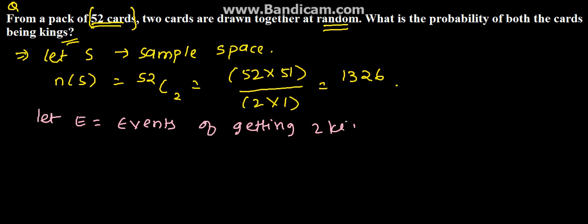We all know that there are four kings in a pack, so two kings out of four. This comes to n(E) will be equal to 4 times 3 divided by 2 times 1. This comes to 6.